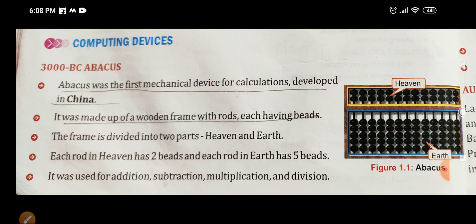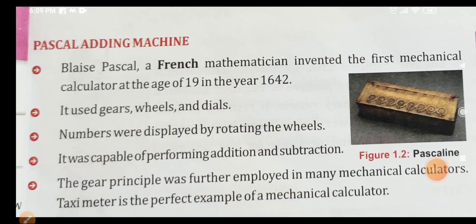The frame is divided into two parts: heaven and earth. The upper part was called heaven and the lower part called earth. Each rod in heaven has two beads and each rod in earth has five beads. It was used for addition, subtraction, multiplication, and division — all calculations could be done with the abacus.